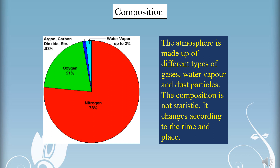Dust particles are generally found in the lower layers of the atmosphere. These particles are found in the form of sand, smoke and oceanic salt. Sand particles have an important place in the atmosphere. These dust particles help in the condensation of water vapour. During condensation, water vapour gets condensed in the form of droplets around these dust particles. Due to this process, clouds are formed and precipitation is made possible.